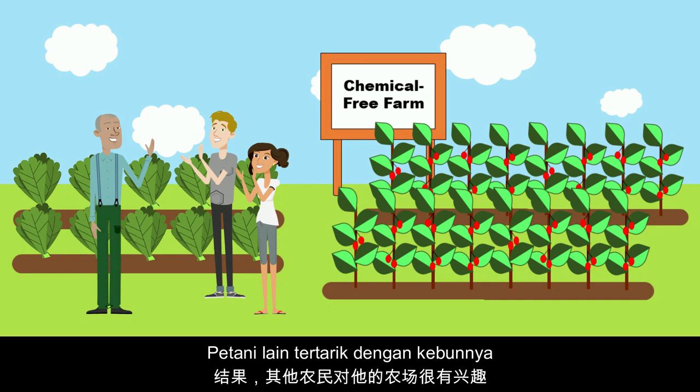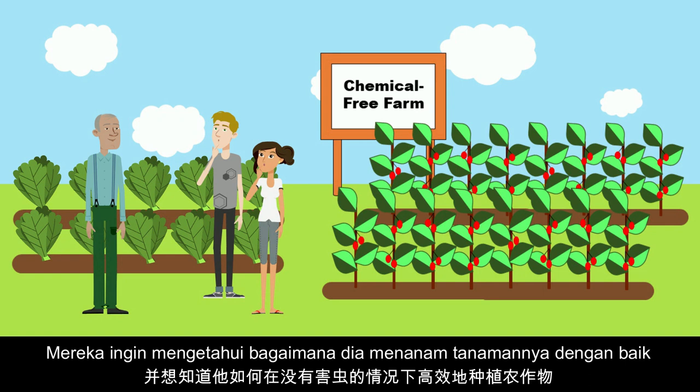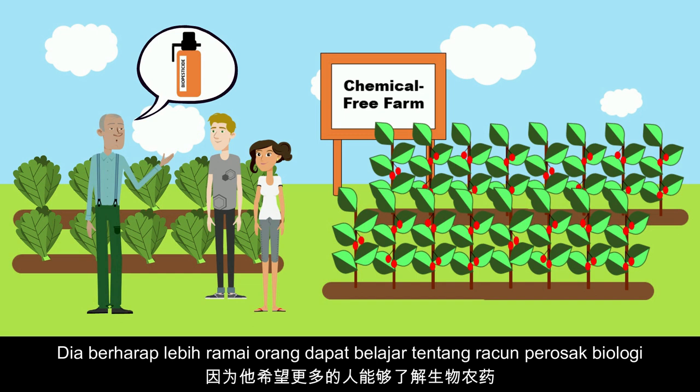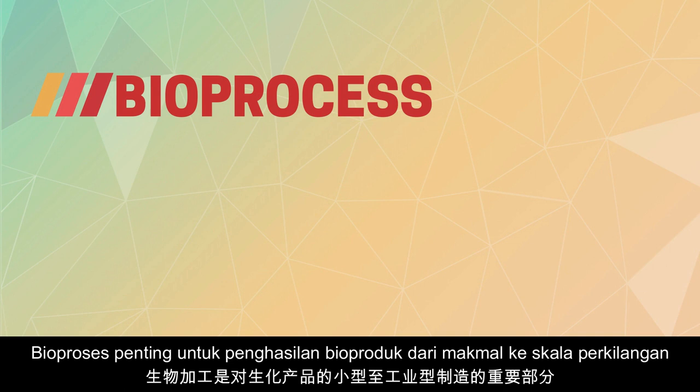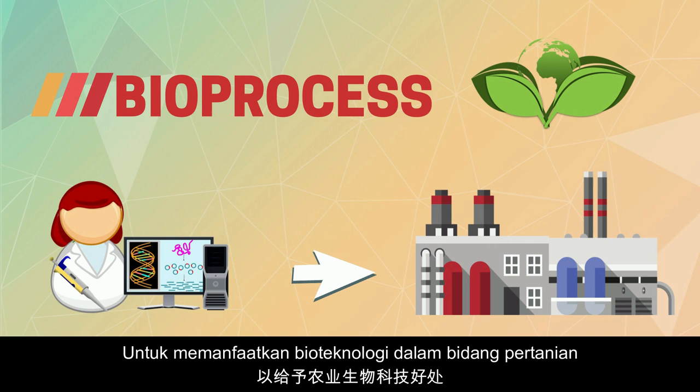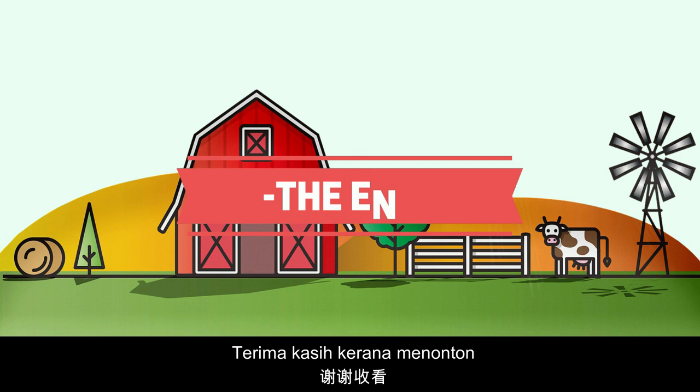As a result, other farmers were fascinated with his farm. They wanted to know how he grew his crops productively without pests, so Ali shared his experience, wishing more people would learn about biopesticides. To sum up, bioprocess is an essential component for the transition of bioproducts from laboratory to manufacturing scale, providing the benefits of biotechnology in the agricultural field. Thank you for watching — if you enjoyed this video, don't forget to like, share, and subscribe.